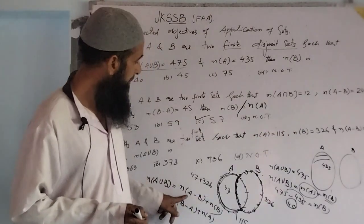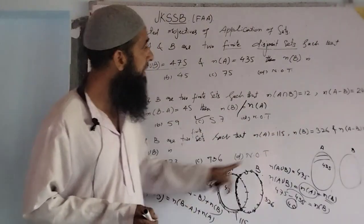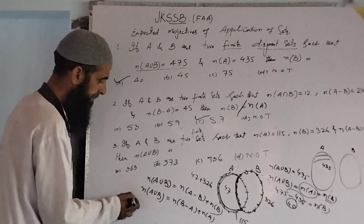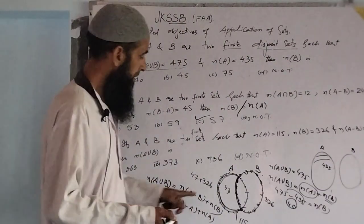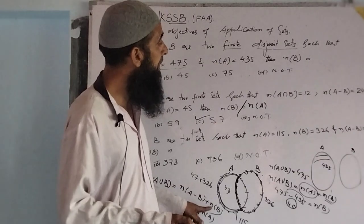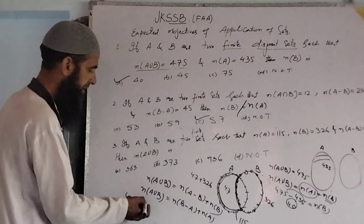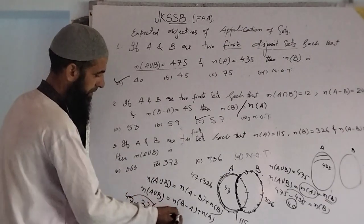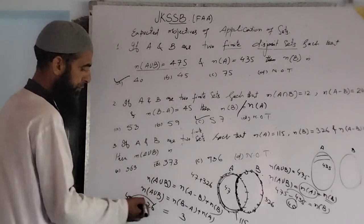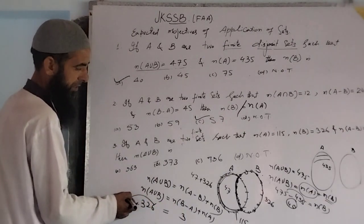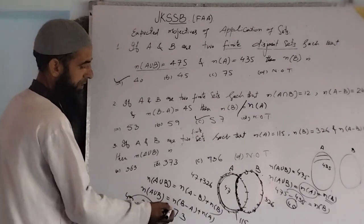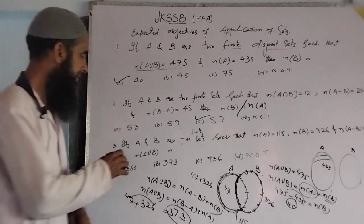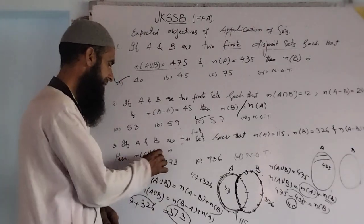A minus B contains 47 elements. Therefore 47 plus 326 equals: 6 plus 7 is 13, carry 1; 2 plus 4 plus 1 is 7; and 3. That gives 373. The second option is the correct answer.